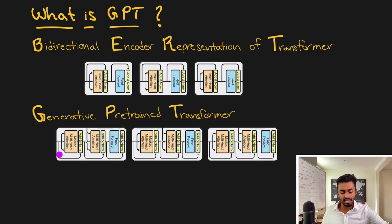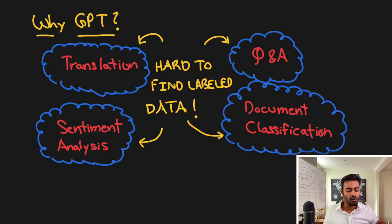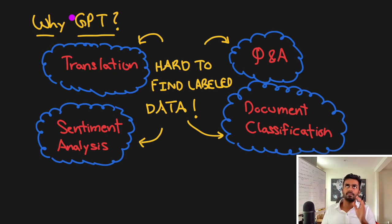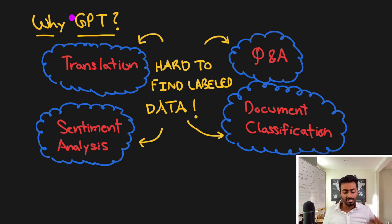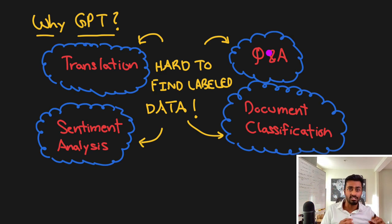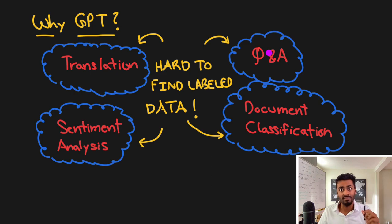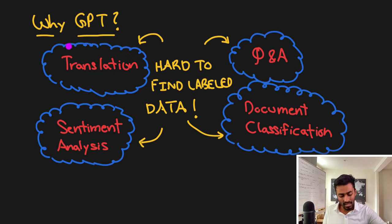Why use GPT architectures over recurrent neural networks or other traditional strategies? To train a typical supervised model, you need to train all parameters from scratch with a lot of labeled data. Unfortunately, this labeled data is extremely hard to find in large quantities, and even when found, the model will probably only handle one domain at a time. To solve this, we adopt a strategy of generative pre-training followed by discriminative fine-tuning.